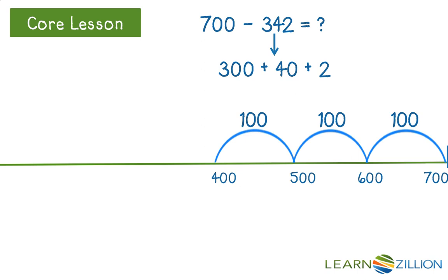Now I'm going to make four tens jumps, because 40 is the same as four tens. So, 390, 380, 370, and taking away another 10 makes 360.